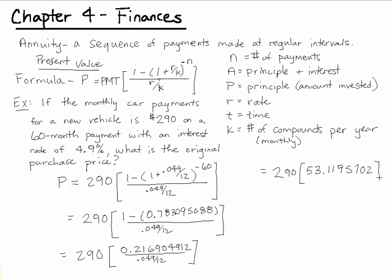Now, finally multiplying this by 290 gives us $15,404.68.